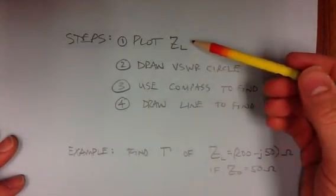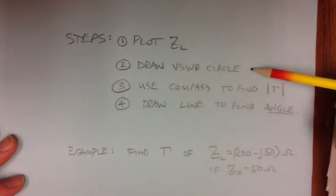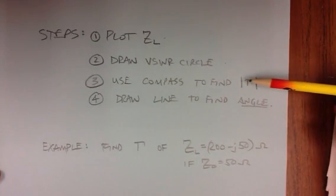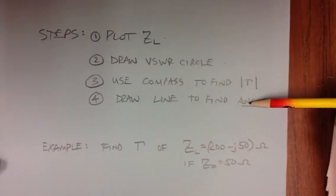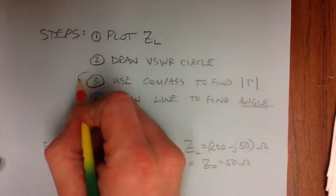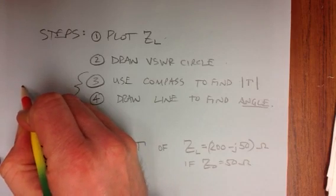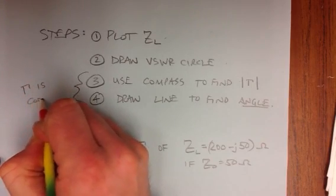First thing you do is you plot the load impedance, then you draw the VSWR circle, then you use a compass to find the magnitude of the reflection coefficient, and then you draw a line in order to find the angle, because it's a complex number.